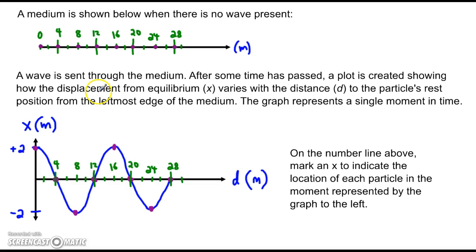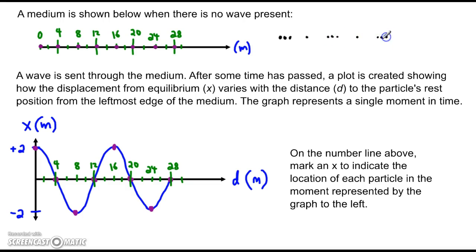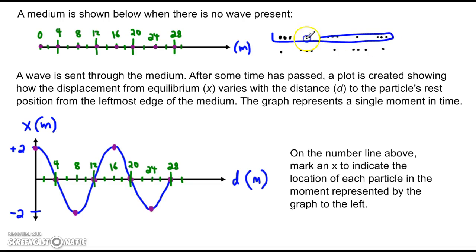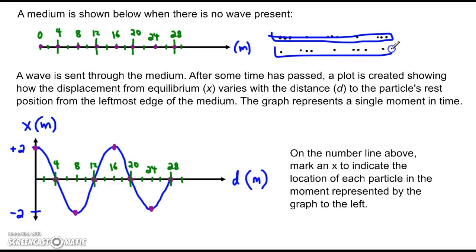The idea is we send a wave through, and now the medium does not look like it did. Particles are scrunched up in some places and spread out in other places — there's a wave. We don't yet know which arrangement is correct: is that what the medium looks like at the moment shown in the graph, or does the medium look like this instead? The question is, what does the medium look like?